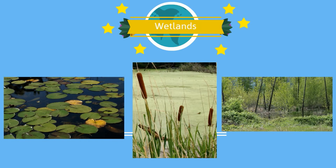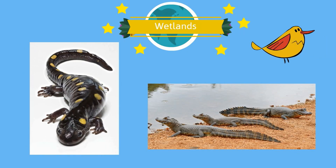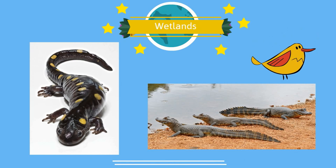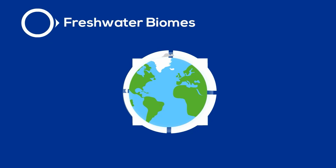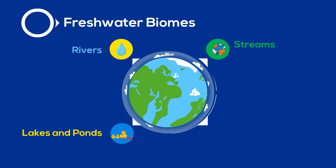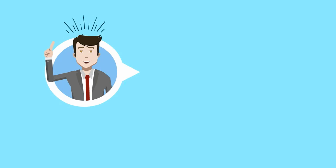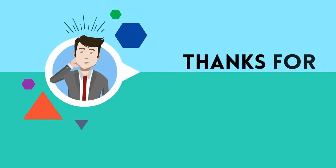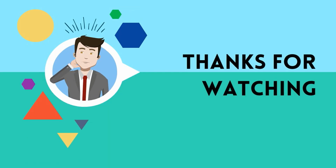Many amphibians including salamanders, reptiles, and birds live in the wetlands. So there we go — freshwater biomes: rivers and streams, lakes and ponds, and wetlands.